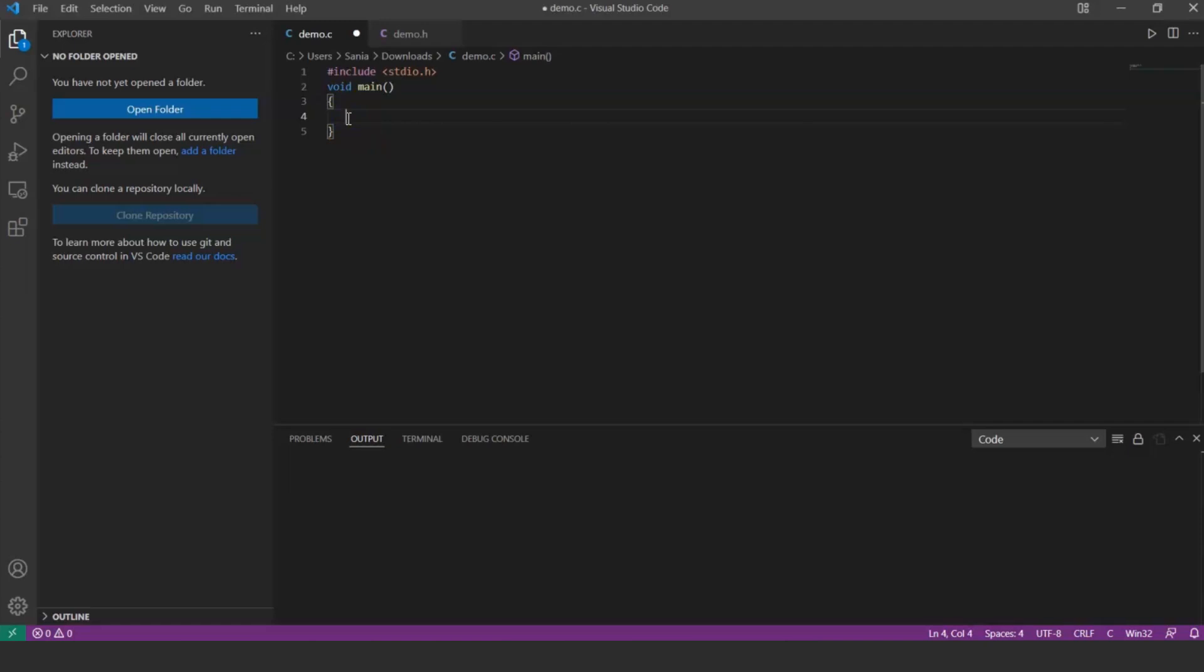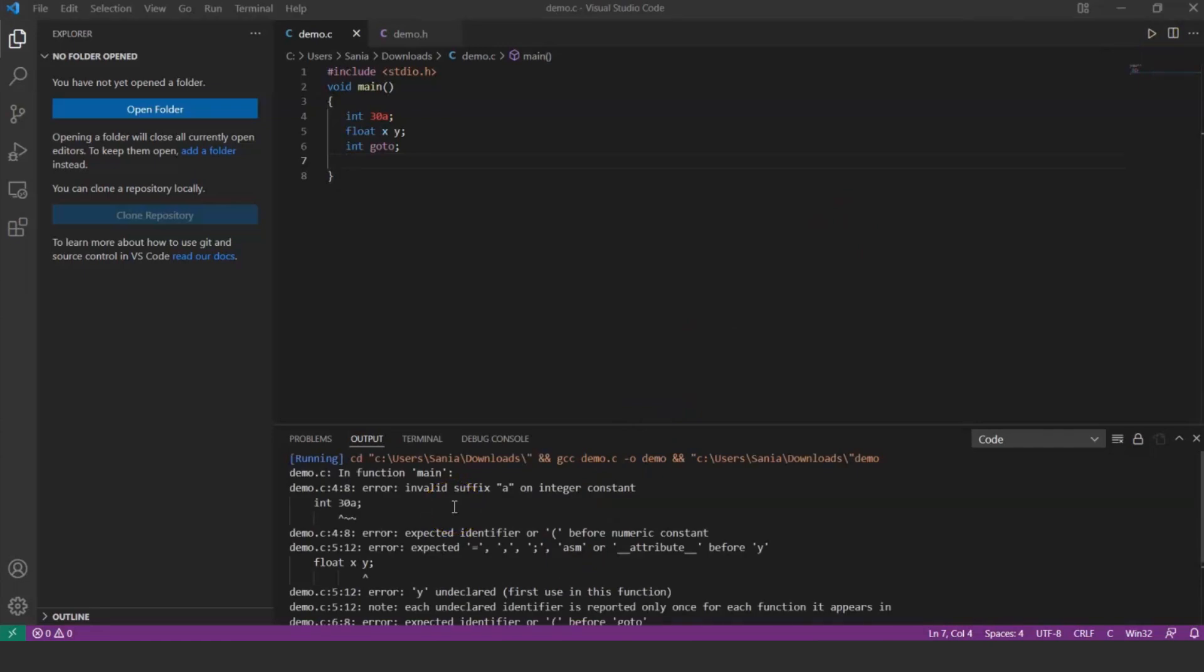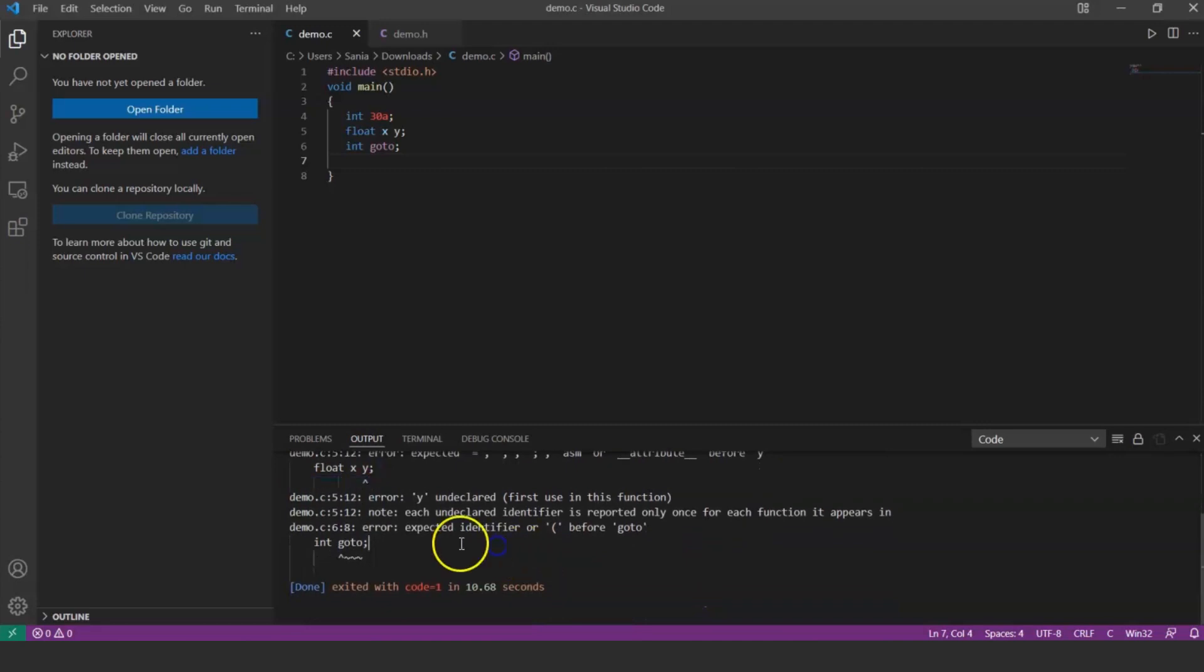Now let's try to declare invalid variable names and run the program: int 30a, float x y, and int goto. After declaring invalid variable names, we got an error for all the variable declarations, stating that invalid suffix on integer constant, expected comma, semicolon before y, and expected identifier.